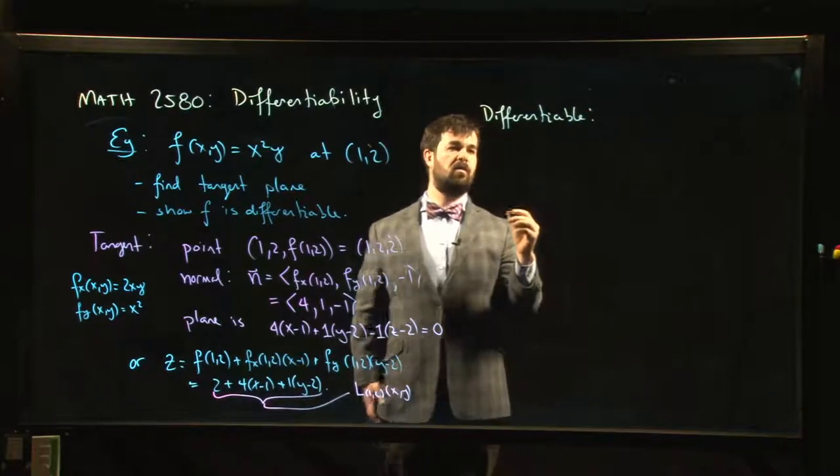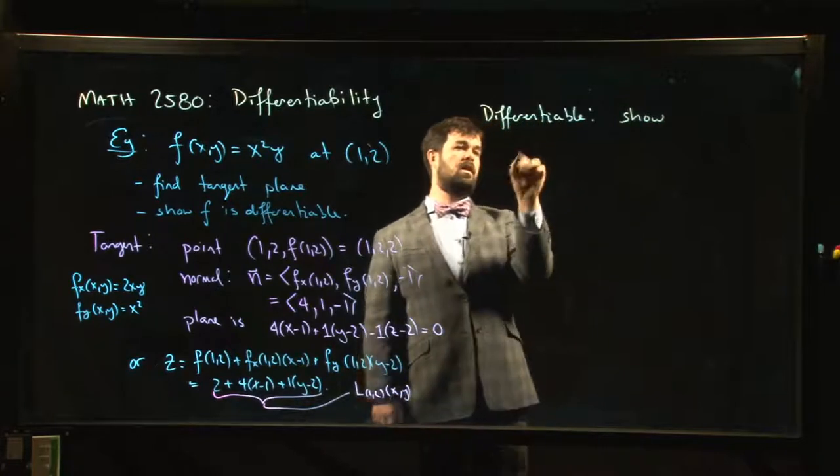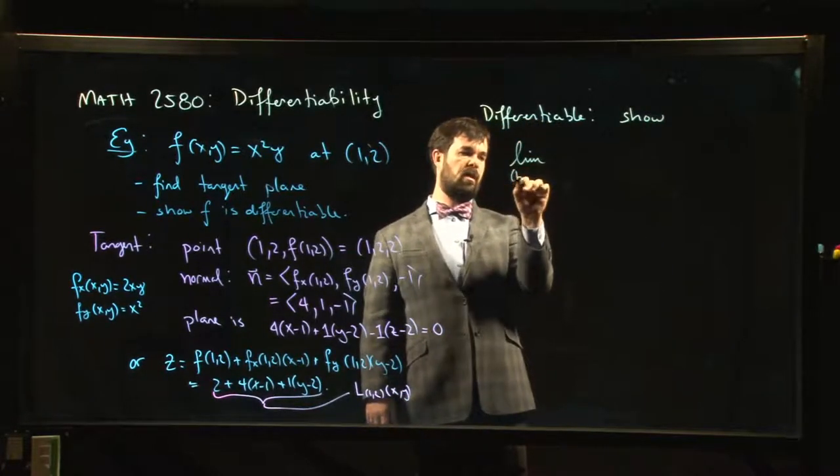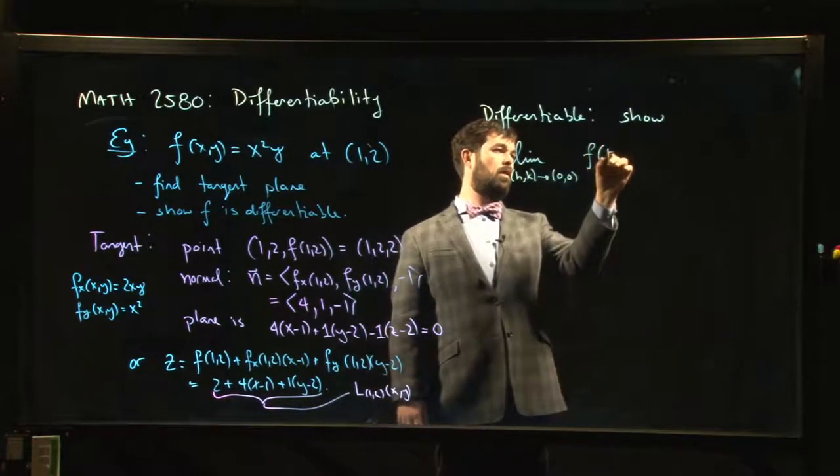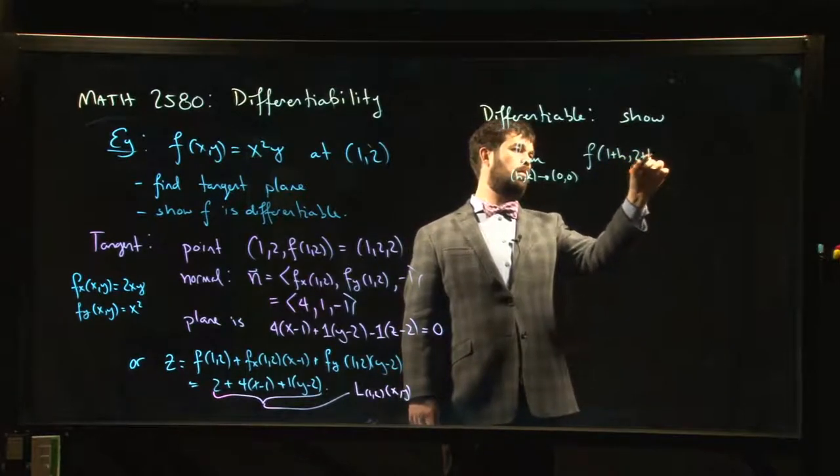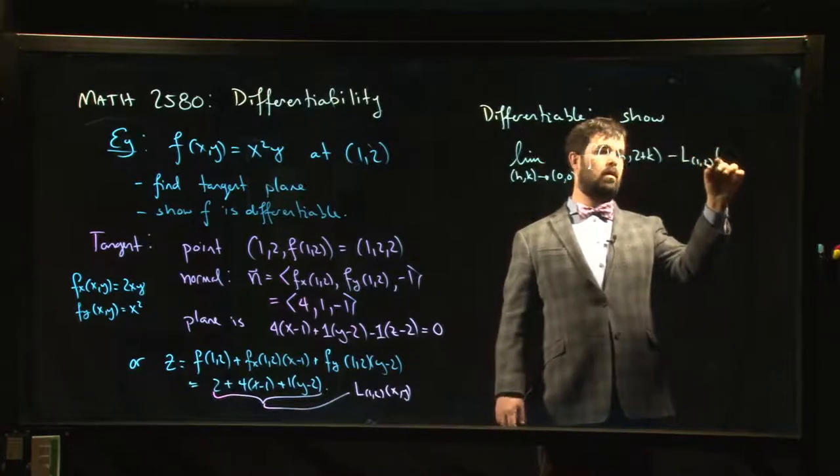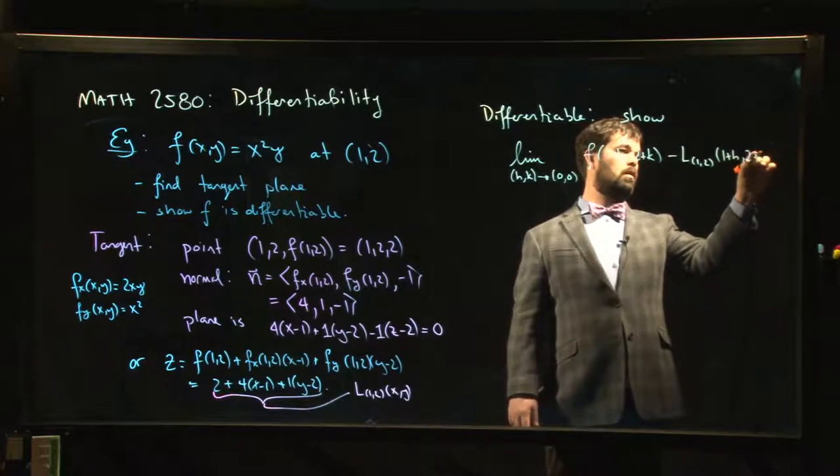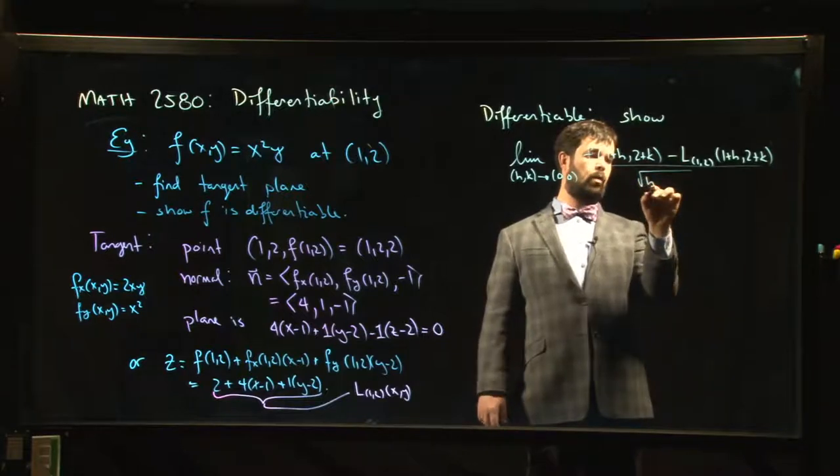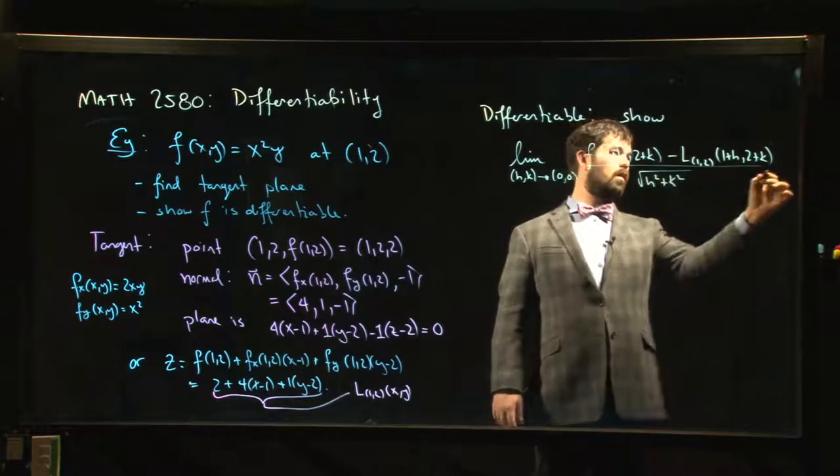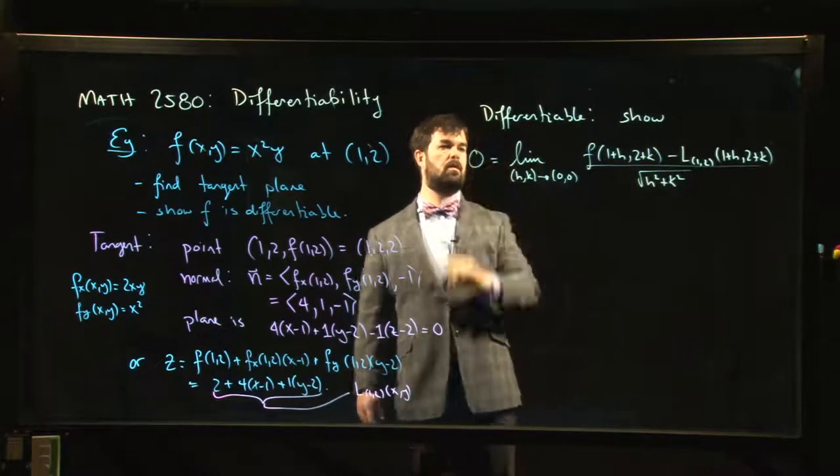Well, we can do this. We have to show that the limit as (h,k) goes to (0,0) of f(1+h, 2+k) minus the linear approximation at (1+h, 2+k) over the square root of h squared plus k squared, we need to show that this limit is 0.